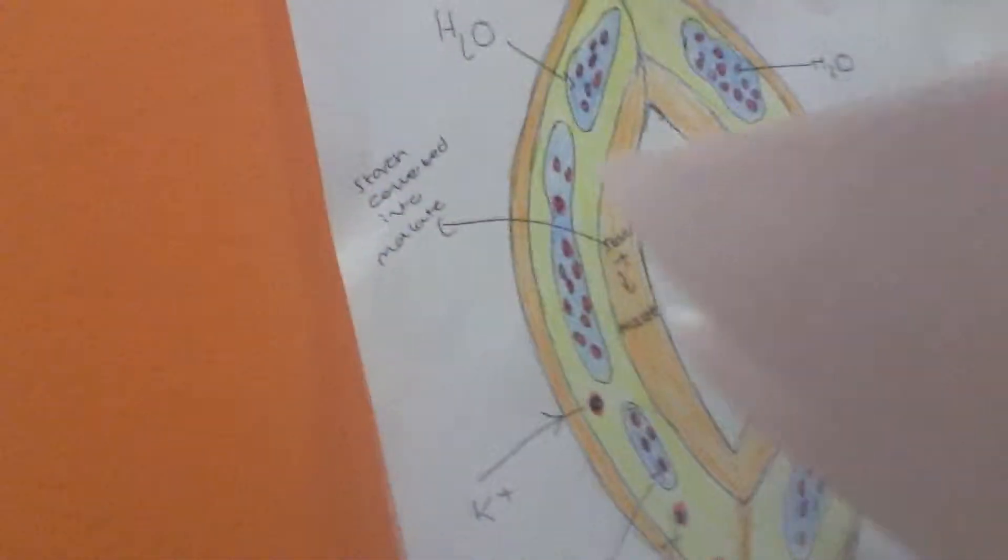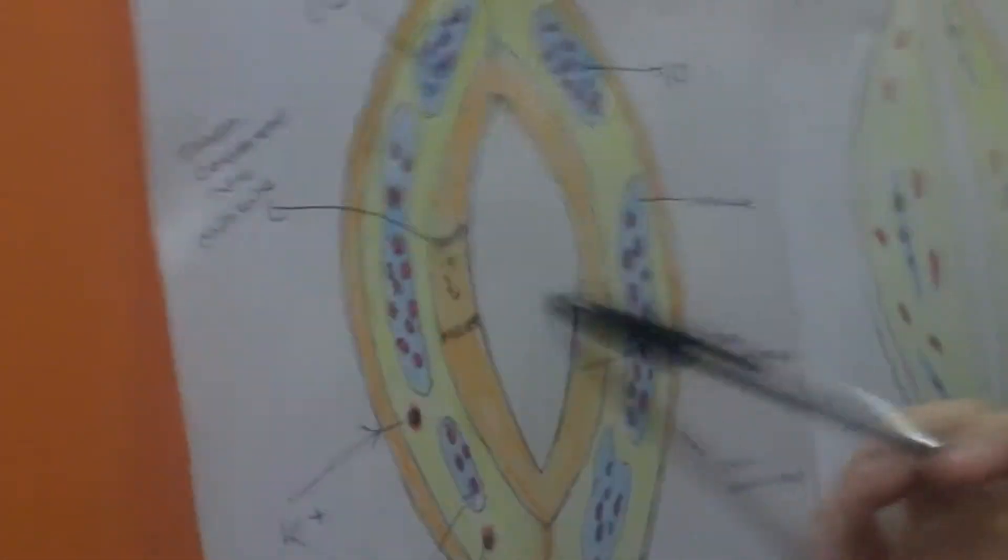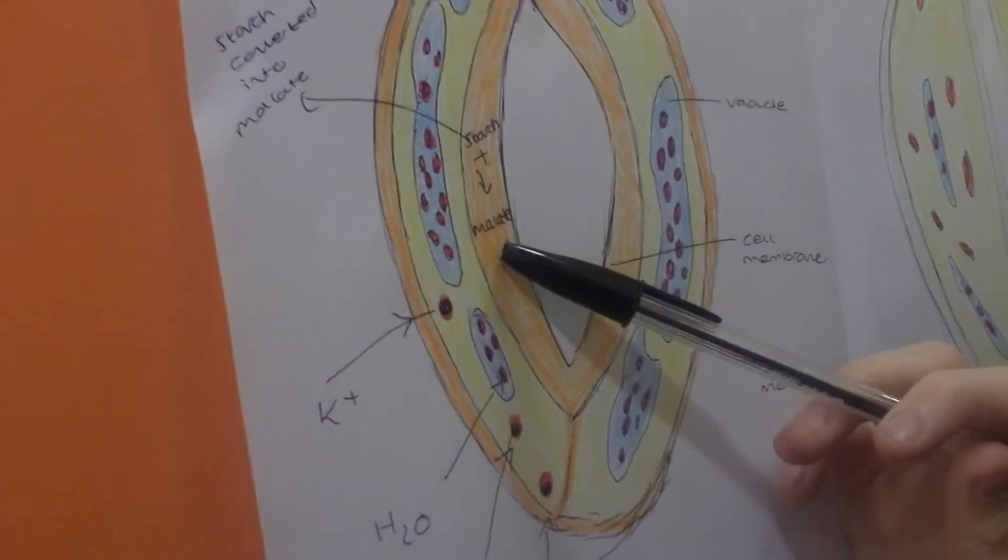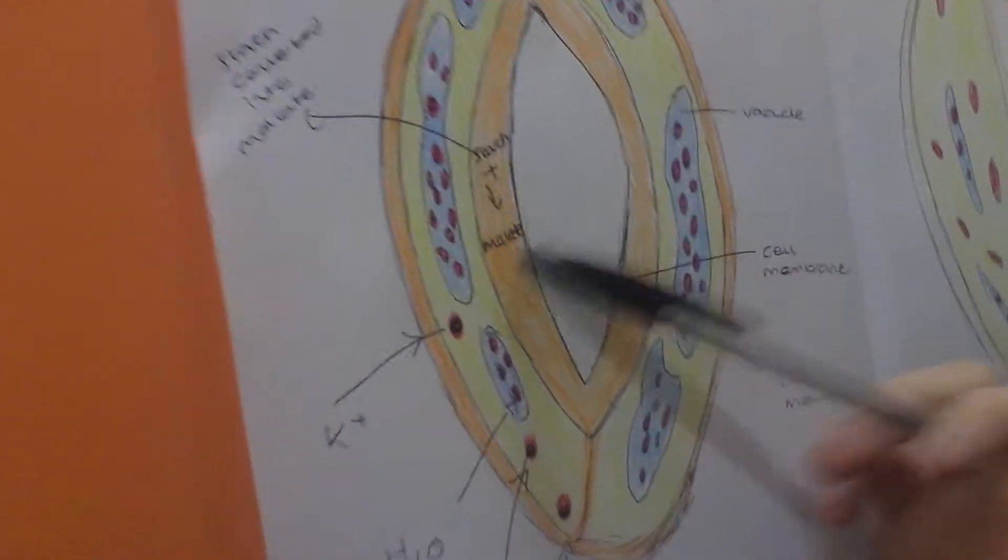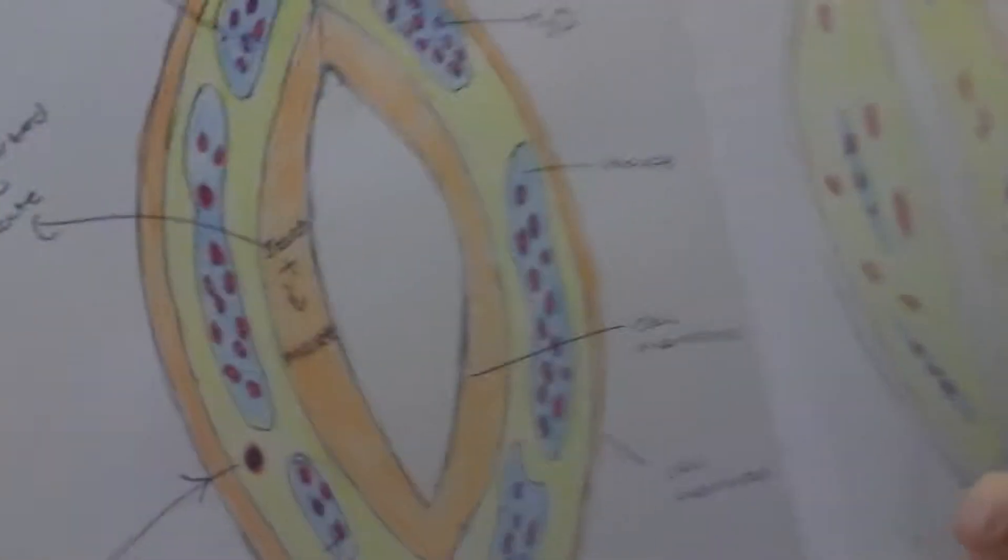The guard cells become turgid due to the thickened inelastic inner wall of the guard cell. The cells curve apart and the stomata opens.